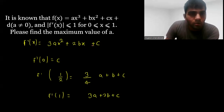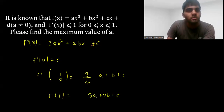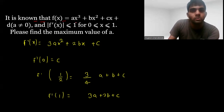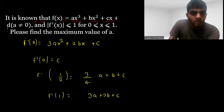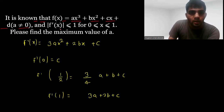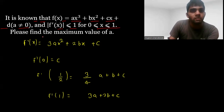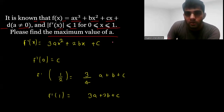Hello guys, in this video we will solve this problem. In the problem it is given that f(x) = ax³ + bx² + cx + d, where a ≠ 0, and |f'(x)| ≤ 1 for x ranging between 0 to 1. Then we have to find the maximum value of a.